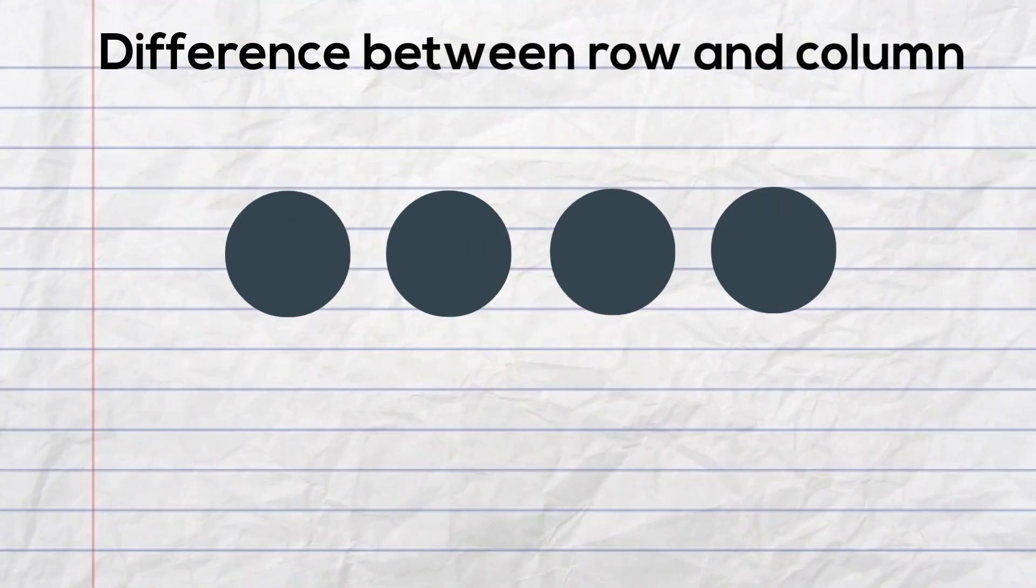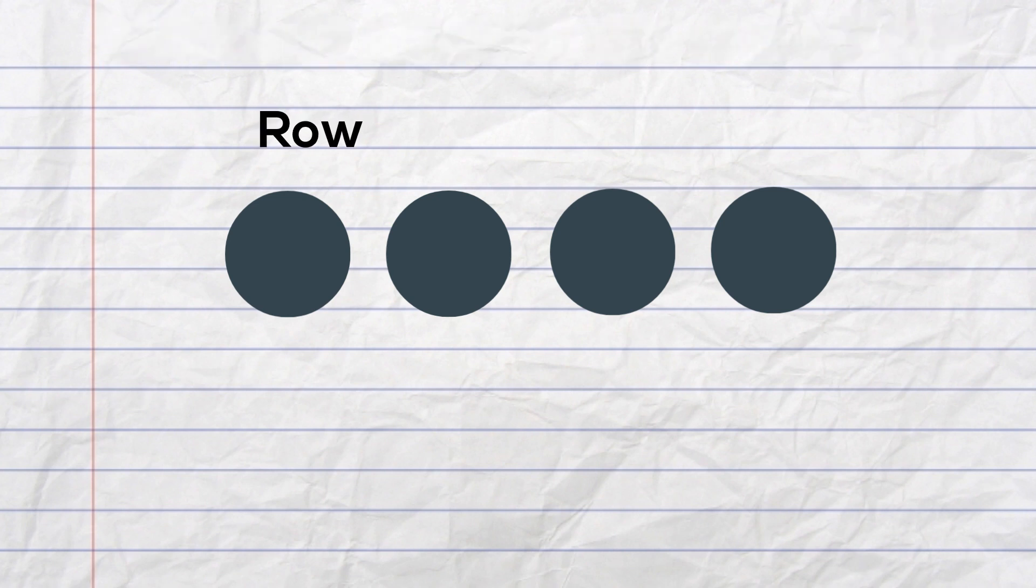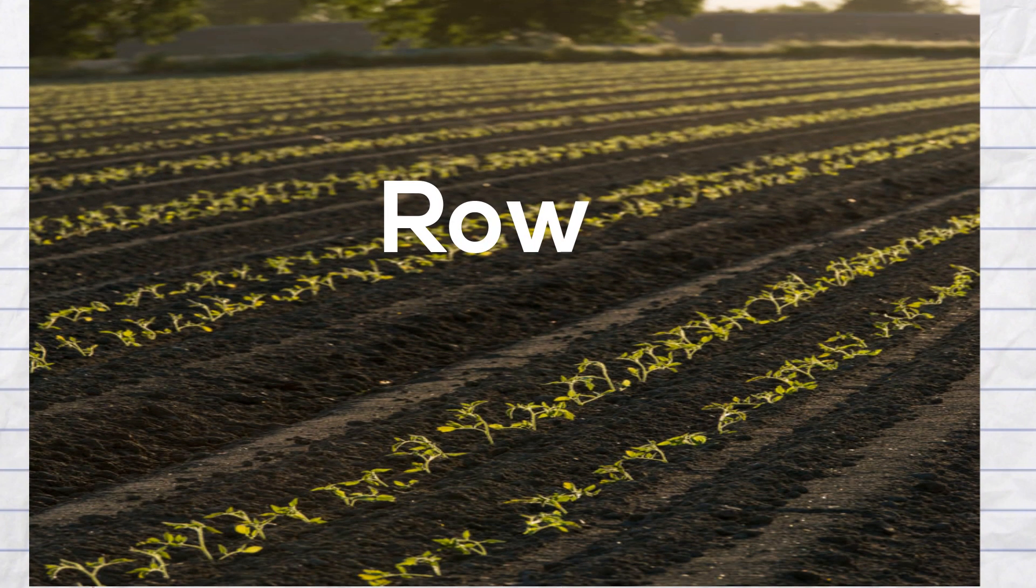Before we get started with division, let's learn the difference between a row and a column. A row is horizontal and moves from left to right. Much like on a farm, the crops are in a row from left to right.